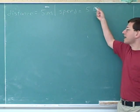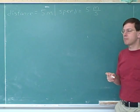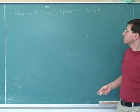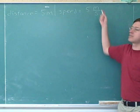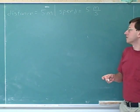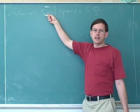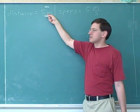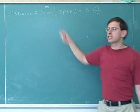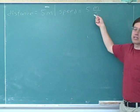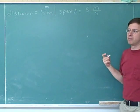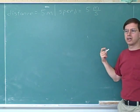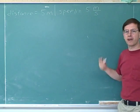Clearly, meters per second is forming that type of ratio. Meters is not a ratio unit because the unit is not a fraction, but meters per second is a ratio unit because the unit there is a ratio — it's a fraction.